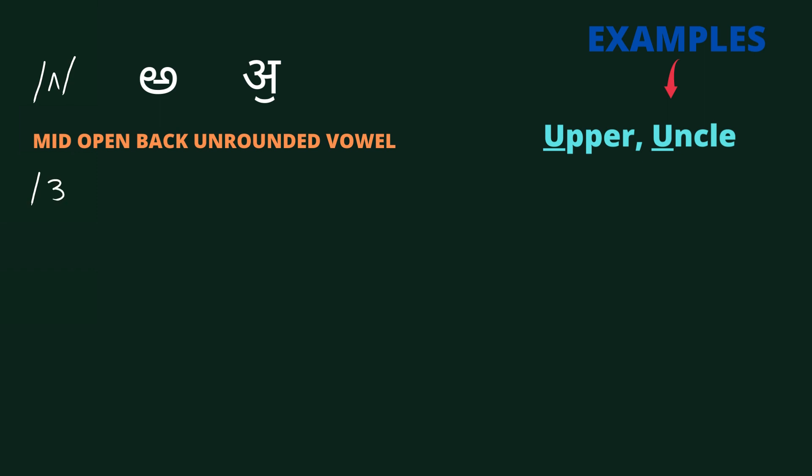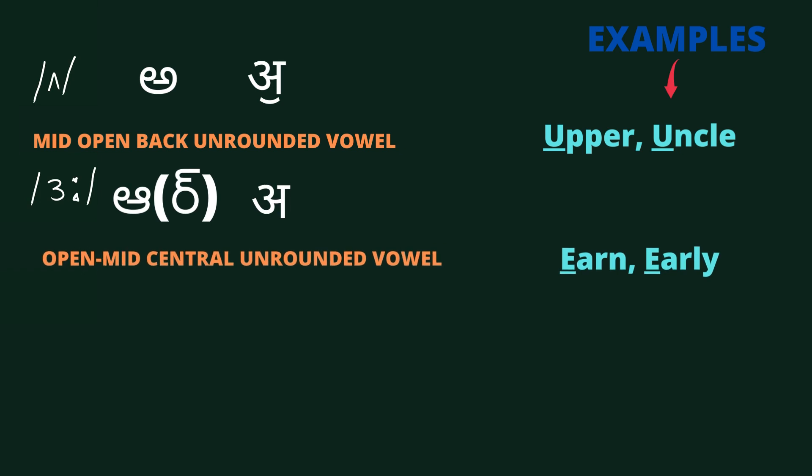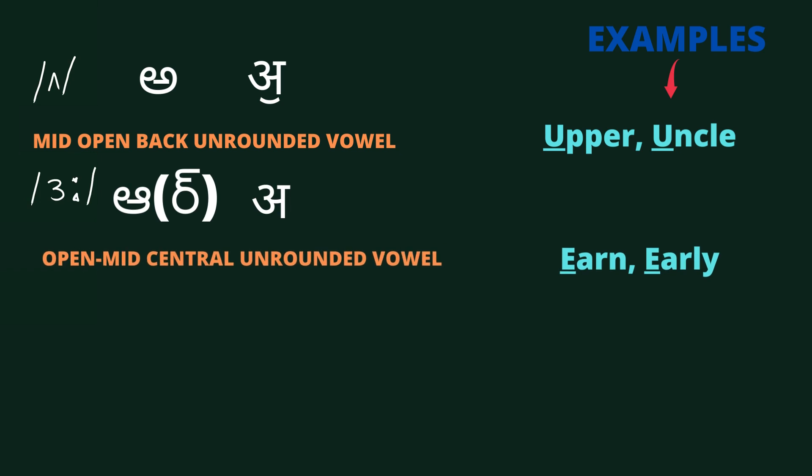This is pronounced as /ɜː/. It is an open-mid central unrounded vowel. Examples are: earn, early.